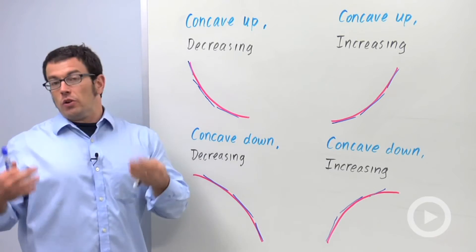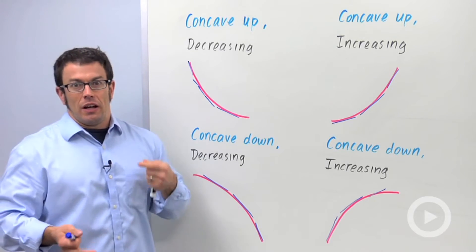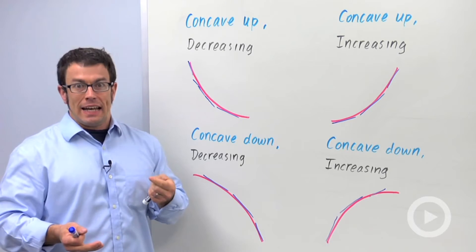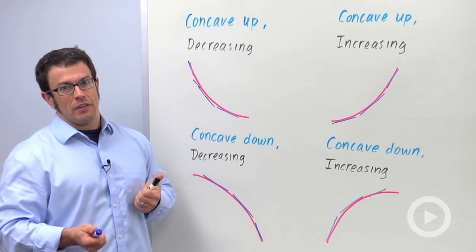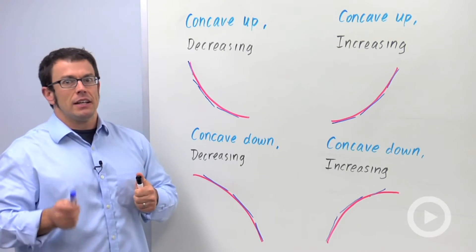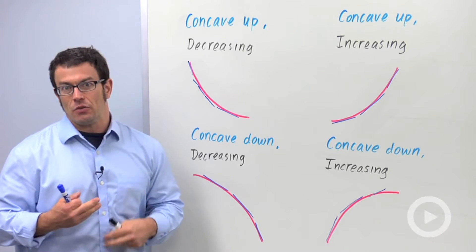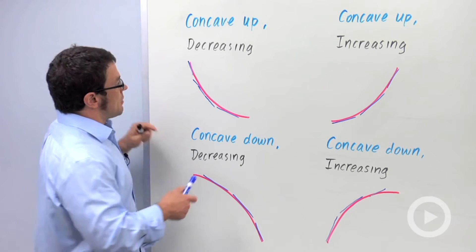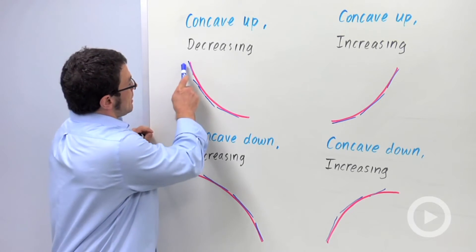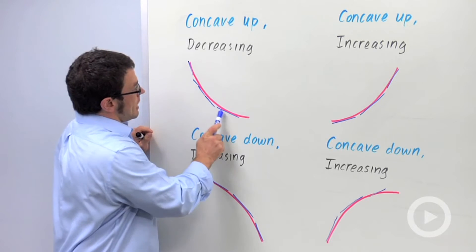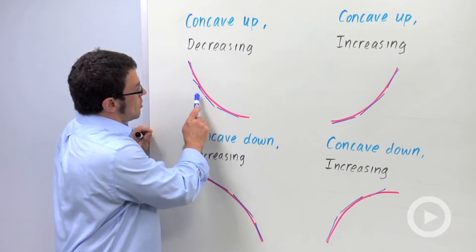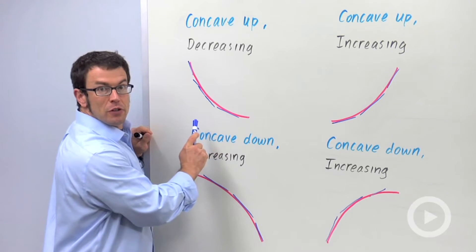Now what you'll need to know on your homework is how to test for concavity. And concavity has to do with the second derivative. If you think about it, each of these tangent lines — its slope comes from the first derivative.